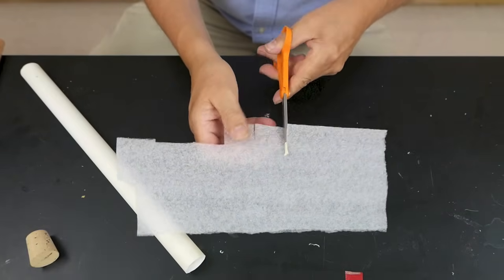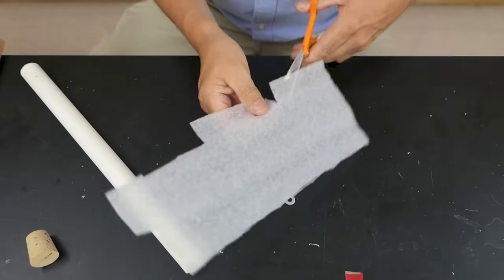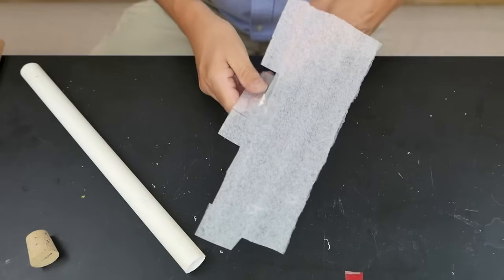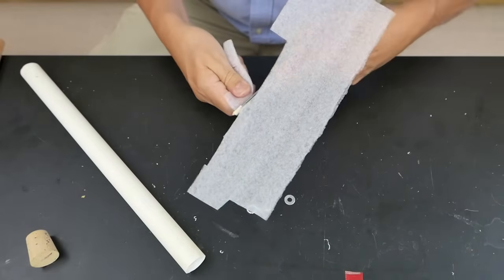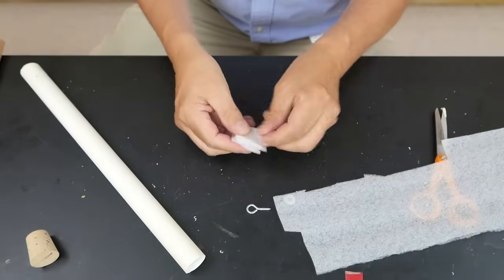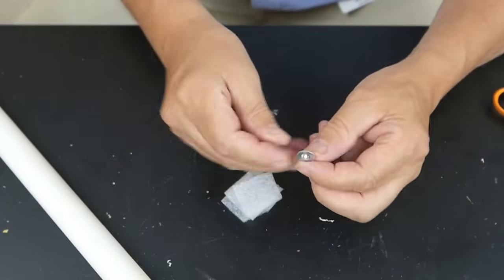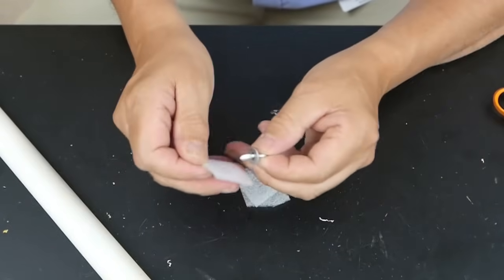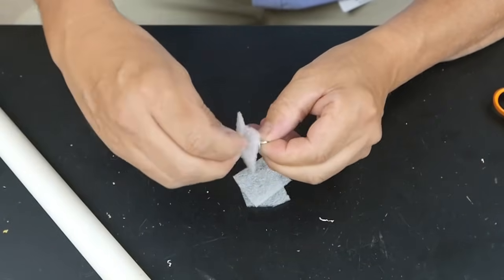Next we're going to use foam packing material to give us a better seal against the piston inside the tube. We're going to cut off some small pieces here, either three or four pieces is fine. Then I'm going to stick them onto an eye hook with a washer on it.